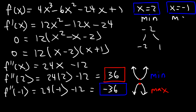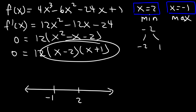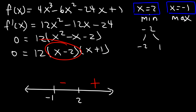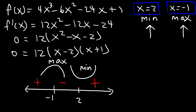Let's confirm the results with the first derivative test using a sign chart. The critical numbers are -1 and 2, and the factored first derivative is 12(x - 2)(x + 1). Plugging in 3: (3-2) positive, (3+1) positive — positive result. Plugging in 0: (0-2) negative, (0+1) positive — negative result. Plugging in -3: (-3-2) negative, (-3+1) negative — positive result. So at x = -1, it's increasing then decreasing: a maximum. At x = 2, it's decreasing then increasing: a minimum. This confirms our answer.